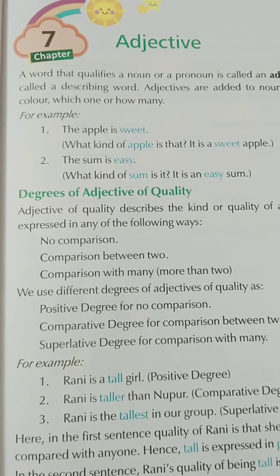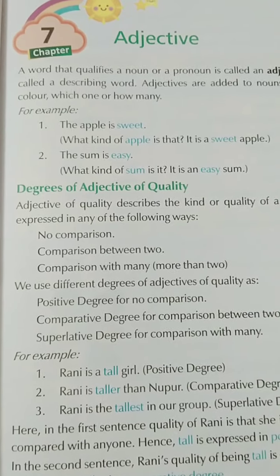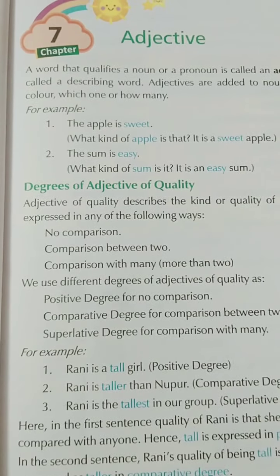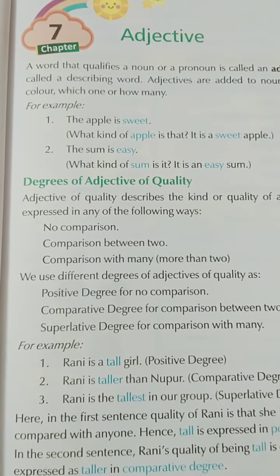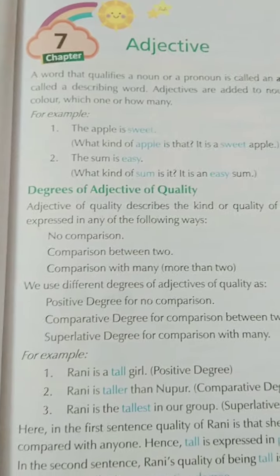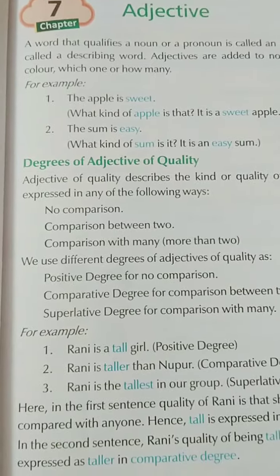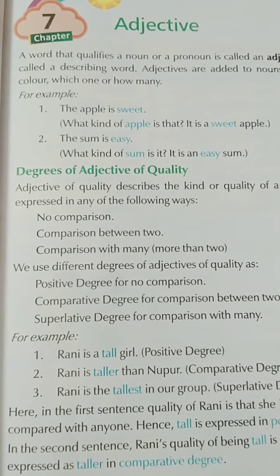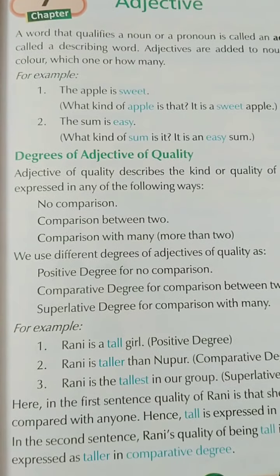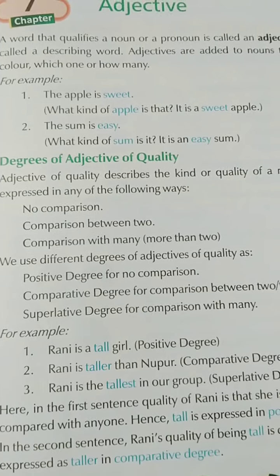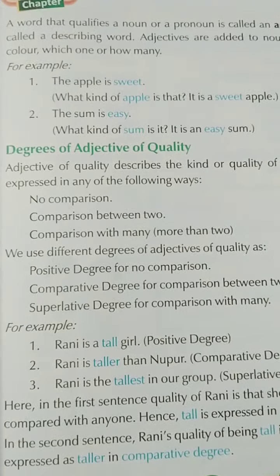An adjective of quality describes the kind or quality of a noun or pronoun. It can be expressed in three ways: no comparison, comparison between two, and comparison with many. We use different degrees of adjectives — positive degree for no comparison, comparative degree for comparison between two or two groups, and superlative degree for comparison with many.